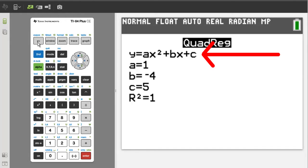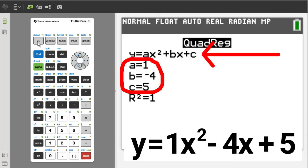So this is the equation of the parabola where a equals 1, b equals negative 4, and c equals 5.